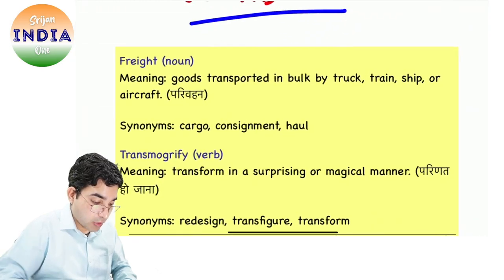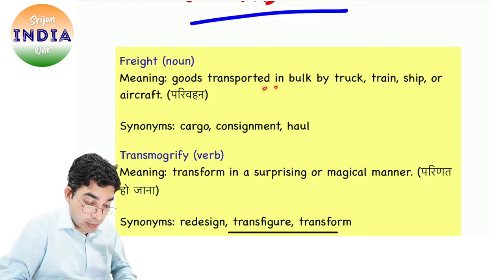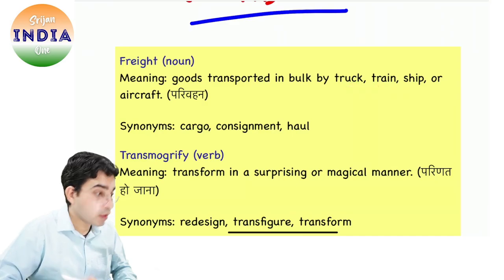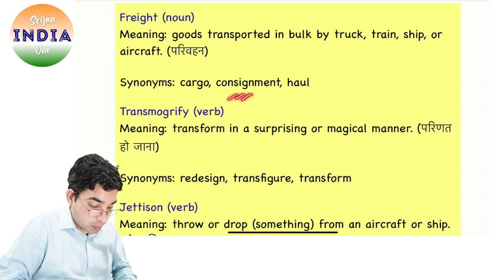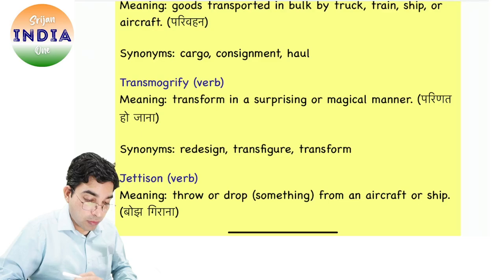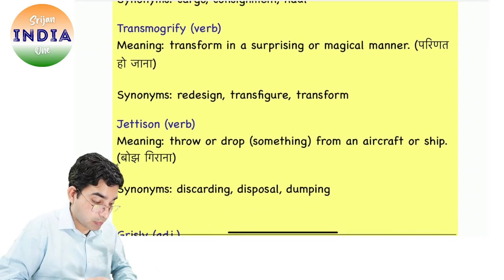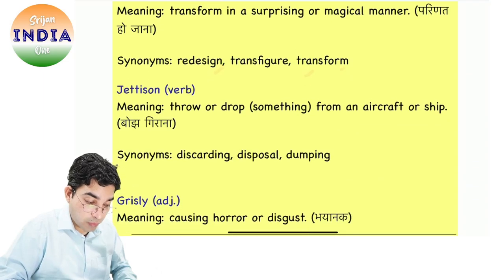Aaj ki vocabulary hai — freight. Freight ka matlab hota hai maldolai, pariwahan. Goods are transported in bulk by truck, train, ship or aircraft. Transmogrify ka matlab hota hai transform in a surprising or magical manner — parinat ho jaana, redesign hona, transfigure hona, transform hona.